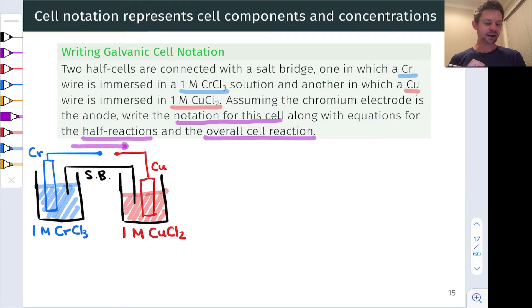So first let's write the cell notation. Well, we have chromium metal. This is where the electrons are coming from. This is the reduced component of the anode. That's in a solid phase by itself. And so we're going to use a single vertical line for the next phase, which is the aqueous CrCl3 with a concentration of one mole per liter. And this is our anode side.